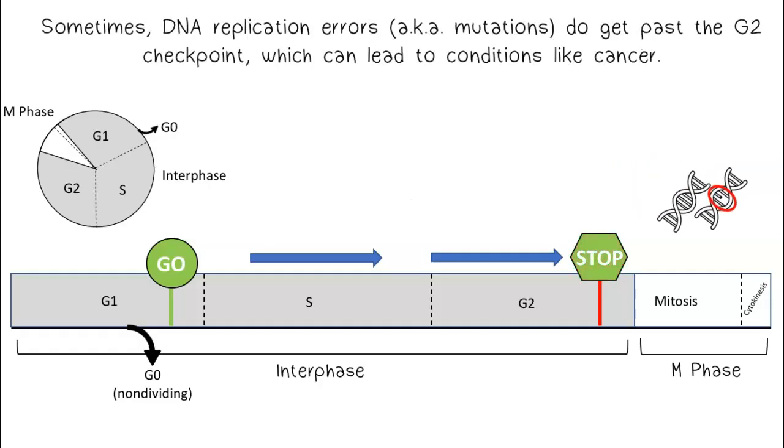Sometimes DNA replication errors do get past the G2 checkpoint, which can lead to conditions like cancer.